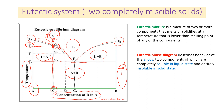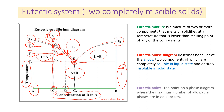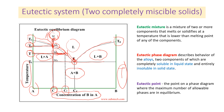Going down again, when T reaches this temperature — symbolized as T, at point MT — the liquid phase of composition CY and the solid phase consisting of A are in equilibrium. As T continues to decrease to this point, this point is what we call the eutectic point: the point where the maximum number of allowable phases are in equilibrium.